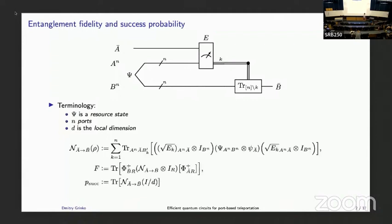We're going to talk about optimal port-based teleportation, so we need to introduce some figures of merit to optimize. More precisely, we can think about this protocol as a quantum channel from A-bar to B-bar. Here E represents a measurement Alice implements with n outcomes, but potentially an additional failure outcome k=0. The channel is not trace-preserving. The two quantities we care about are entanglement fidelity — defined in the standard way using an EPR state with a reference wire — and average success probability, which is the probability of Alice not observing the failure outcome.